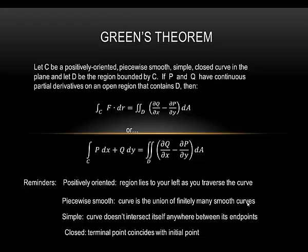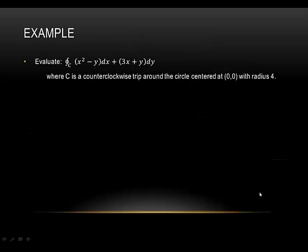That is the kind of curve we need to apply Green's Theorem. If the curve we're computing the line integral over does not meet all of these criteria, then Green's Theorem is not going to apply. Here's an example: we have a line integral written in differential form, and our curve is one counterclockwise trip around a circle centered at (0, 0) with radius 4.